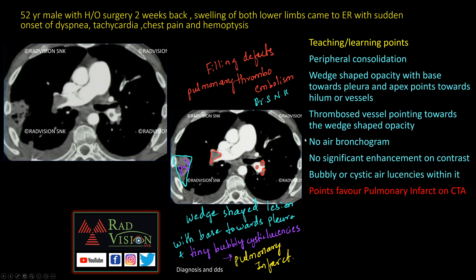Points favoring pulmonary infarct over consolidation: wedge-shaped peripheral area, a thrombosed vessel pointing toward the opacity, absence of air bronchograms, no significant enhancement on contrast, and multiple bubbly or cystic air lucencies within the opacity.